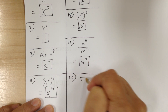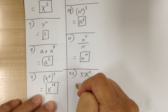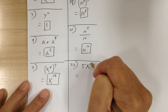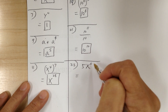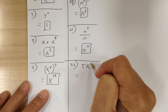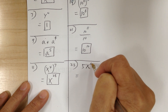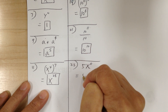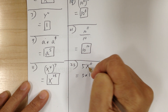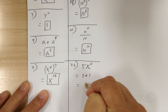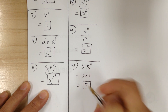You got 5x to the 0. Anything to the 0 power is equal to 1. But remember, the exponent only applies to what is immediately before it — so the 0 is only for the x. So this is equal to 5 times 1, which is 5.